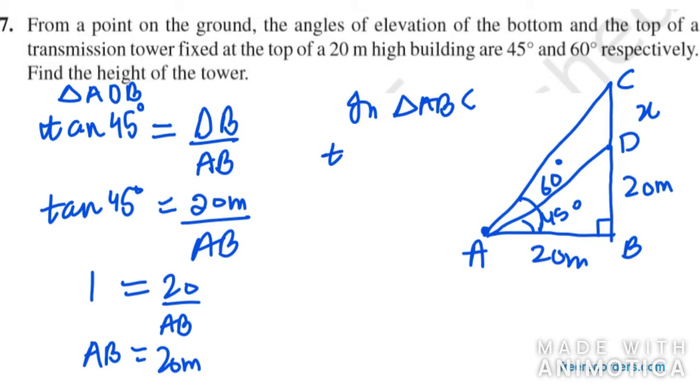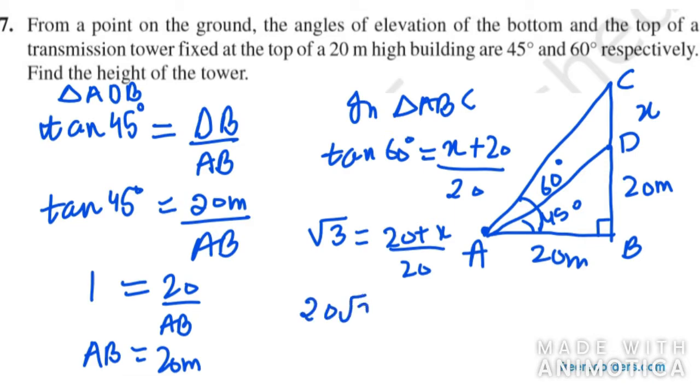So in triangle ABC, it will be tan 60 degree equal perpendicular, in this case is X plus 20. So I will write X plus 20 over 20. Tan 60 degree is under root 3. So under root 3 equals 20 plus X over 20. Need to use cross multiplication here, so 20 under root 3 equals 20 plus X.